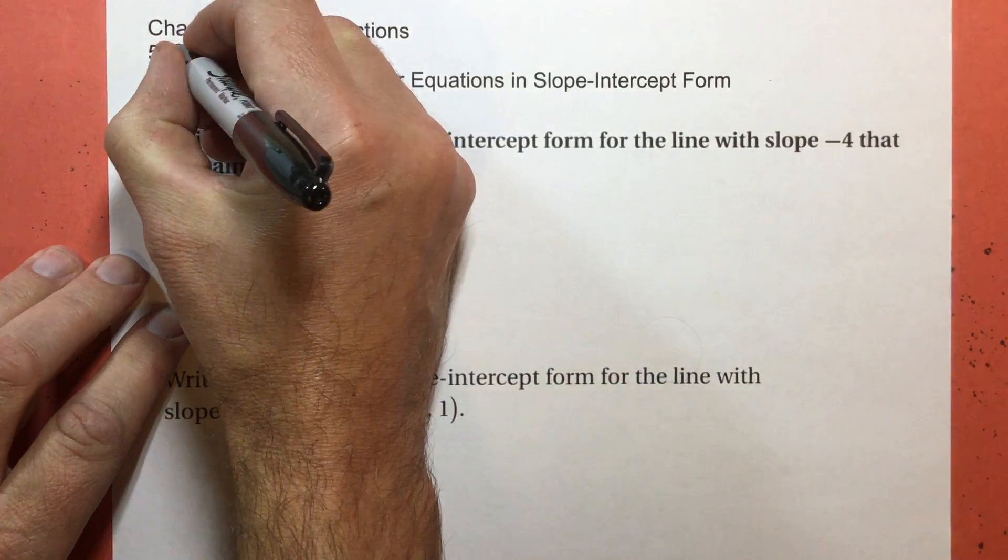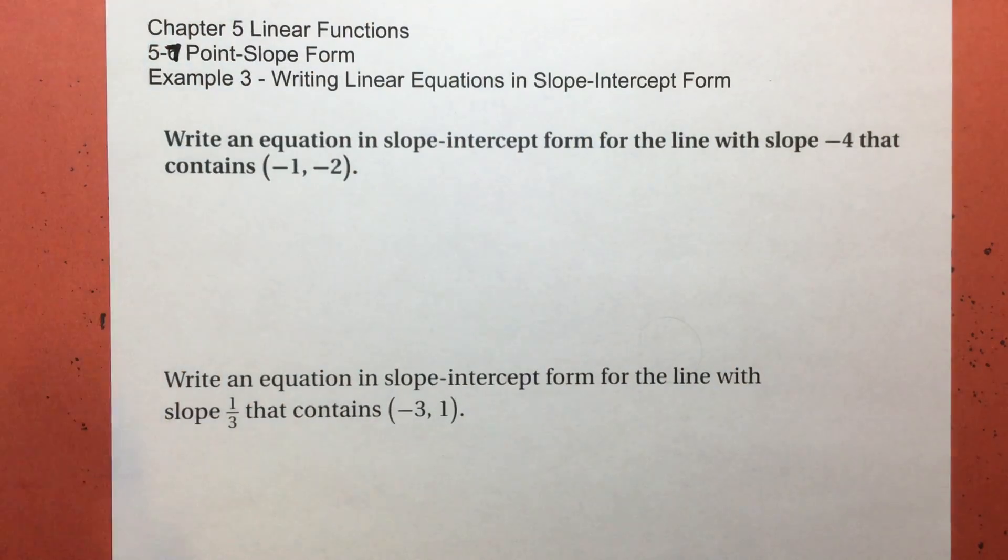Hello. Welcome to 5.7 again. I saw no point in reprinting all those. Example number three, we're going to do exactly what we did in the previous video, except for one thing. We're going to change it into slope intercept form.